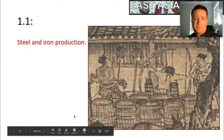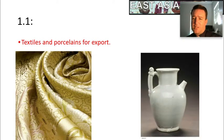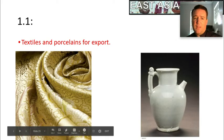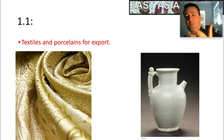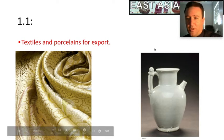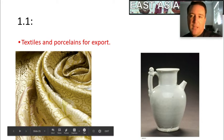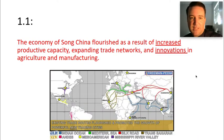Steel and iron production increased. Textiles and porcelains were created more for export — silk was a continuation but production increased. More was being sold across trade networks like the Silk Roads. Porcelain was something highly in demand by Europeans when they eventually arrived, and China increased production because of that demand.